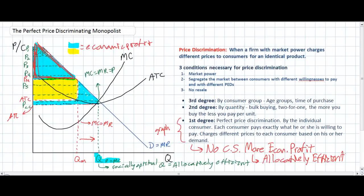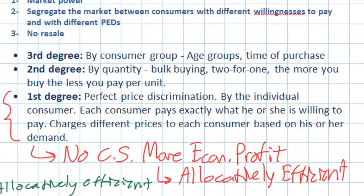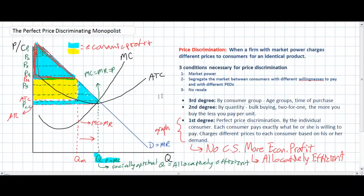This video defined price discrimination, discussed the three conditions necessary for a firm to price discriminate, and defined the three degrees. Which degree is most common? First-degree price discrimination is not very common — it's very difficult for a firm to determine the exact price each individual consumer is willing to pay. Second and third degree are much more common, based on quantity purchased or consumer groups like age, gender, or time of purchase. However, second and third degree do not achieve the increase in allocative efficiency that perfect price discrimination theoretically does, and less consumer surplus is transferred to firms under these degrees.